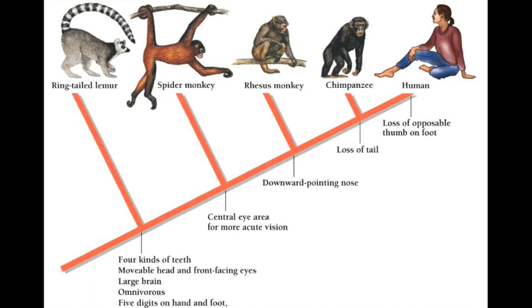Similarly, a cladogram shows characteristics between different types of primates and humans: lemur, spider monkey, rhesus monkey, chimpanzee, and human. Every organism on this slide has four kinds of teeth, a movable head, front-facing eyes, a large brain, is omnivorous, and has five digits on hand and foot with opposable thumbs. Breaking it down: central eye area for more acute vision applies to spider monkey and up; downward-pointing nose applies to rhesus monkey and up; loss of tail applies to chimpanzee and up; and loss of opposable thumb on foot applies to humans.